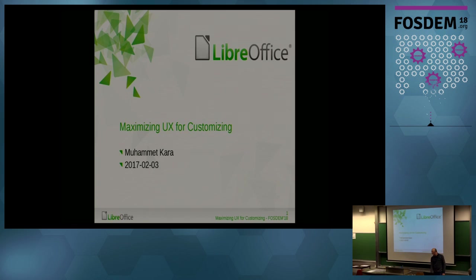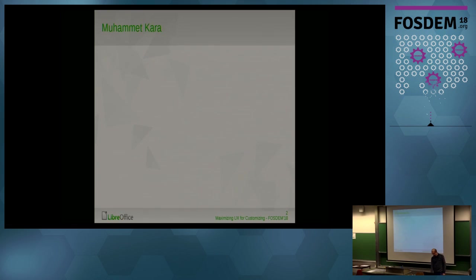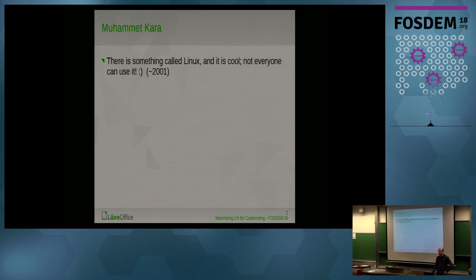Let me talk a little about myself first. In 2001, a friend told me that there is something called Linux, and it was cool because not everyone could use it, so we would be special and we started using it. Then the Pardus project, a Debian-based distro started in Turkey, and I started contributing to it. It was using the KDE desktop environment. I also contributed to Ubuntu through Launchpad, mostly localization.